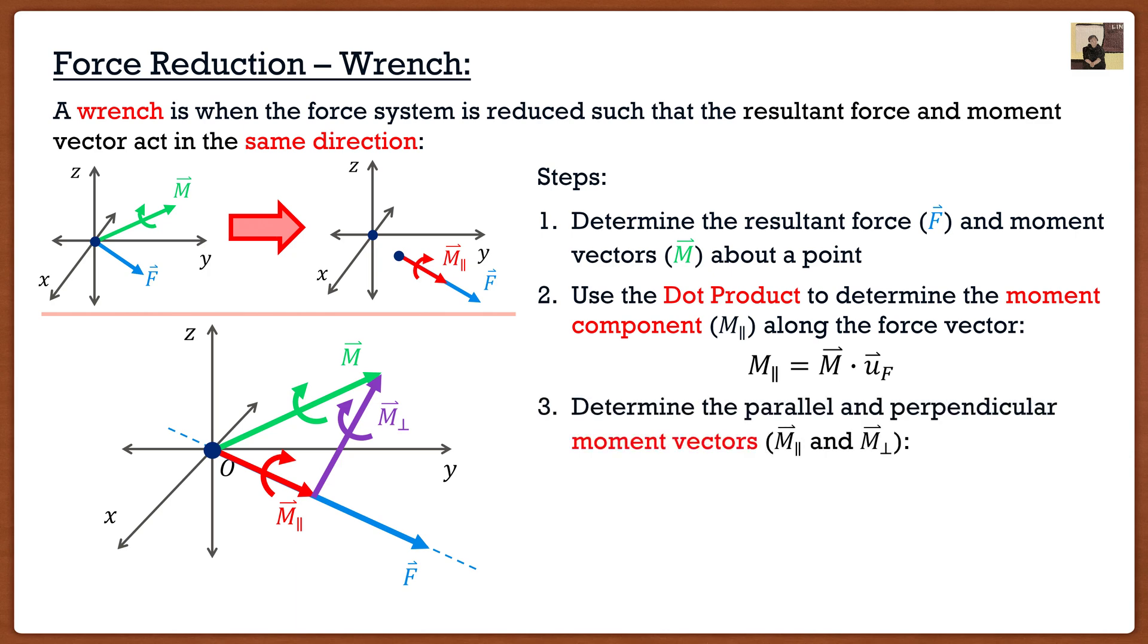So what we're going to do is we're going to find the parallel and perpendicular moment component vectors. So we know if we know the magnitude of a vector and we want it in the Cartesian vector notation all we have to do is multiply it by the vector defining its direction. Which is nice because if we look at this parallel vector we know it goes in the same direction as our force vector. Therefore the parallel component in vector form is actually just going to be the magnitude of the parallel component which we solve for using the dot product above multiplied by the unit vector of our force vector. So now we have M parallel as a vector.